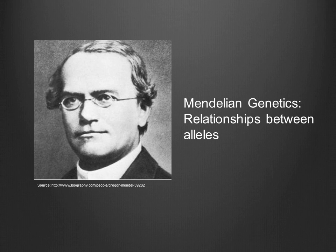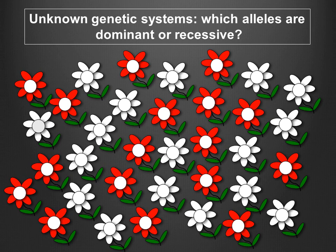In next week's lab, you'll be given several unknown genetic systems and asked to elucidate several properties of those systems. Your first task will be to determine the dominance properties of the system — that is, which alleles are dominant and which are recessive. Although you will be working virtually, you can compare this exercise to a hypothetical real-life situation in which you discover a new species of plant with red and white flowers.